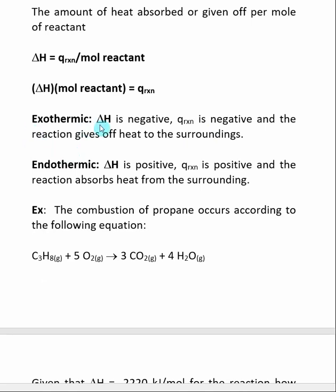An exothermic reaction means that delta H is negative. When we look at this reaction equation we know moles of reactant is always going to be positive. So if delta H is negative, Q of reaction is going to always be negative, and this means our reaction is giving off heat to the surroundings. So if a reaction is exothermic, it means that it gives off heat.